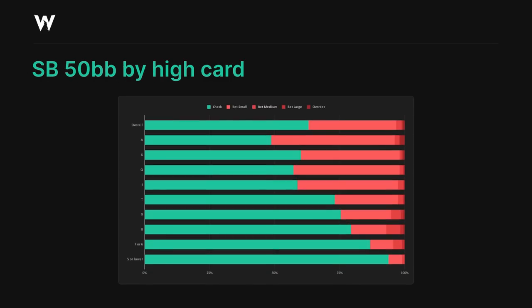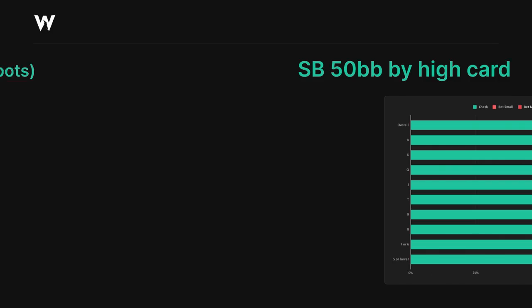This is a breakdown of the strategy according to the flop high card at 50 big blinds. There's a very obvious trend here: the lower card boards are significantly less favorable for the small blind, to the point where the triple wheel boards are almost pure checks. When we combine this somewhat linear scale with the insight from the previous graphic, it's clear that a board which is say, nine high and monotone or eight high and connected should have very little betting, while an ace high disconnected board might be a little more favorable.